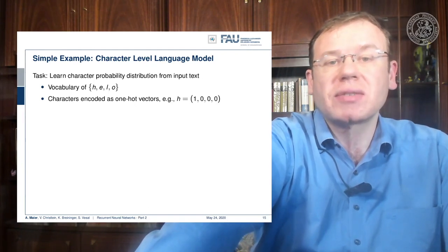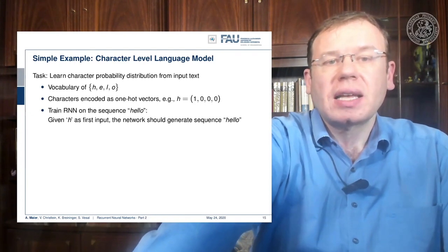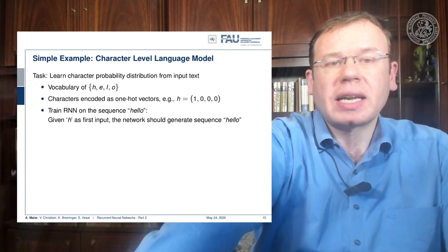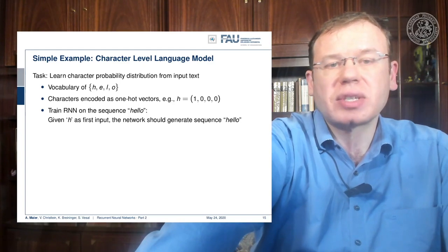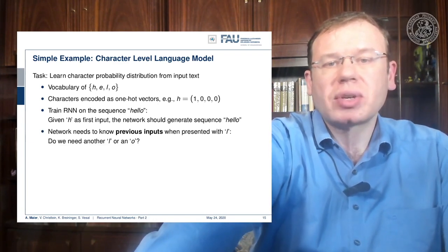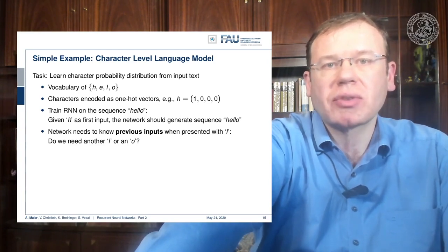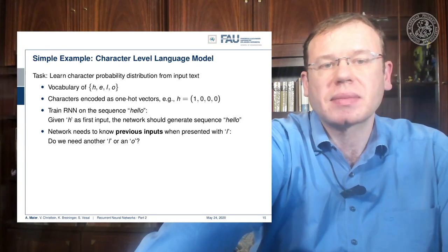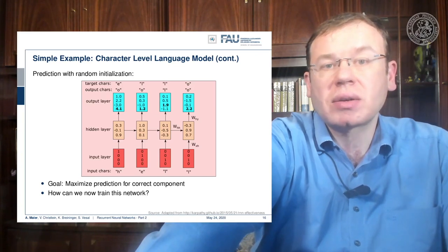We encode them as one-hot vectors, which gives us for example for 'h' the vector [1, 0, 0, 0]. We can then train an RNN on the sequence 'hello' and we should learn that given 'h' as the first input, the network should generate the sequence 'hello'. The network needs to know previous inputs when presented with an 'l', because it needs to know whether it should generate an 'l' or an 'o' — same input but two different outputs — so you have to know the context.